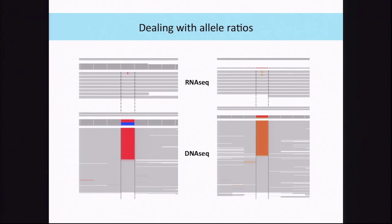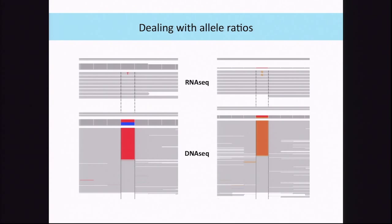One very important point: when you get to the variant recalibration step, this is where you're filtering variants to decide which ones you keep for your analysis. For DNA, we have a very sophisticated algorithm that allows you to do the filtering using machine learning. For RNA-Seq, you cannot yet use the VQSR recalibration process. Instead, you'll be doing manual filtering, and we provide some parameters for filtering your RNA-Seq variants. Additionally, with RNA-Seq, allele ratios will diverge from the diploid expectation due to expression differences — something we're currently working on.